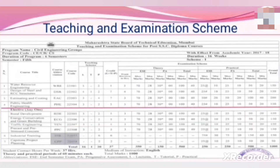First, we will see Teaching and Examination Scheme. There are total 7 subjects in the 5th semester. The fourth subject is Public Health Engineering. Its course abbreviation is PHE and course code is 22504. There are weekly 3 lectures and practicals of 2 hours per batch, for a total of 5 credits.